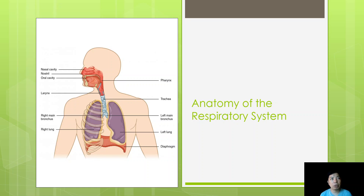Now let's talk about the anatomy of the respiratory system. It is divided into two parts: the upper respiratory tract and the lower respiratory tract. The upper respiratory tract consists of the nose, the nasal cavity, the pharynx, the larynx, and the trachea. For the lower respiratory tract, you have the left and right bronchus, and the lungs themselves.